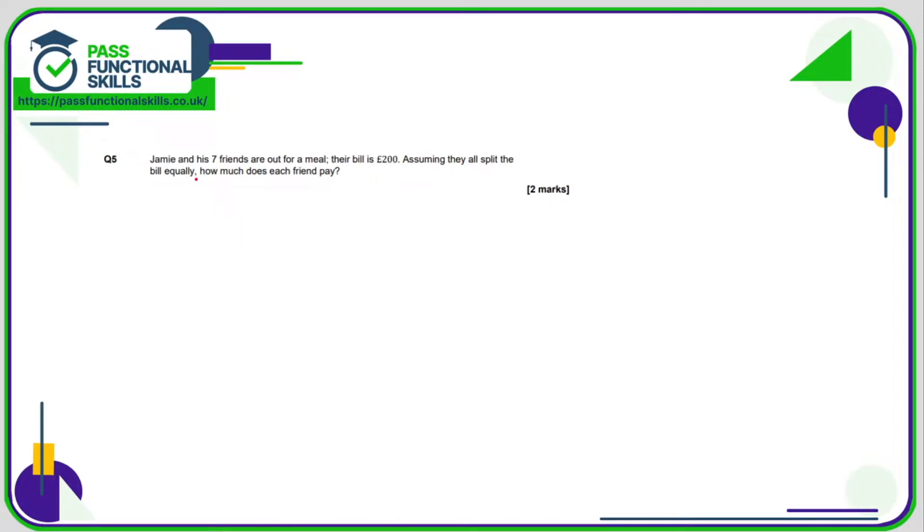Question number 5. Jamie and his 7 friends are out for a meal. The bill is £200. We are dividing this not by 7, which was the mistake I made the first time around, but by 8 because Jamie is not one of the 7 friends. So we're dividing 200 by 8. 8's into 2 don't go, carry the 2. 8's into 20 goes twice with a remainder of 4. 8's into 40 go 5 times. So they all have to pay £25 per person.